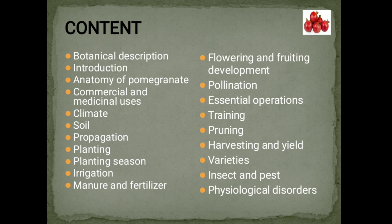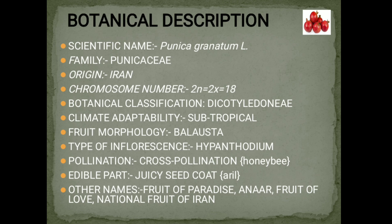Botanical Description: Scientific Name — Punica granatum. Family — Punicaceae. Origin — Iran. Chromosome number: 2n = 18. Botanical Classification — Dicotyledon. Climate Adaptability — Subtropical. Fruit Morphology — Balausta. Type of inflorescence is Hypanthodium.